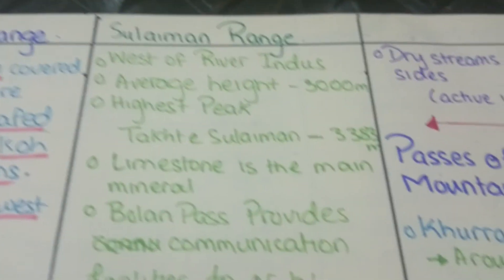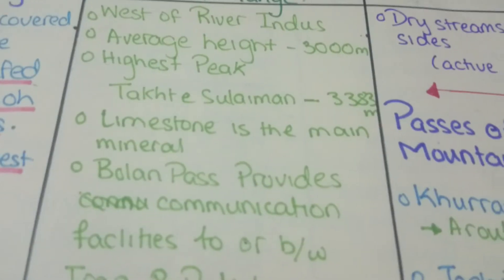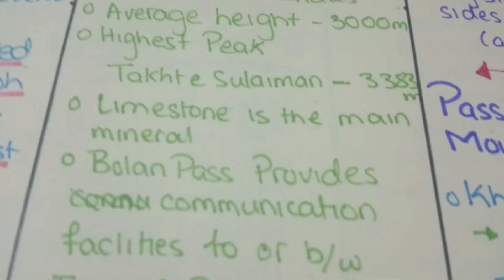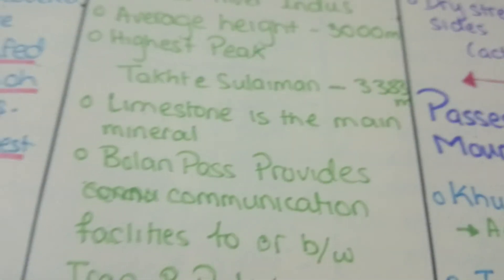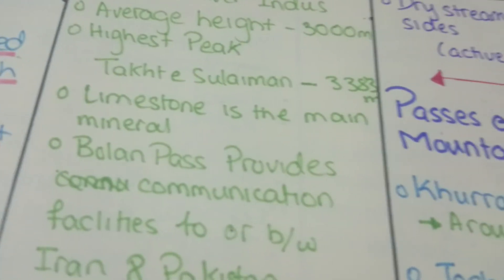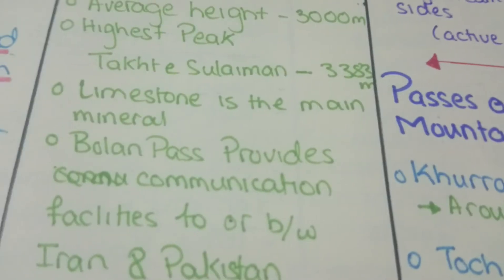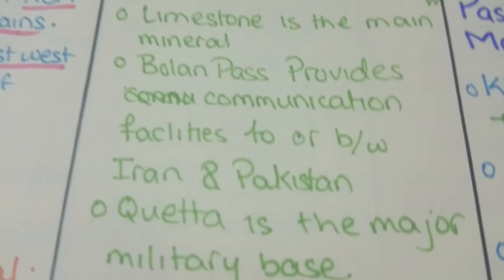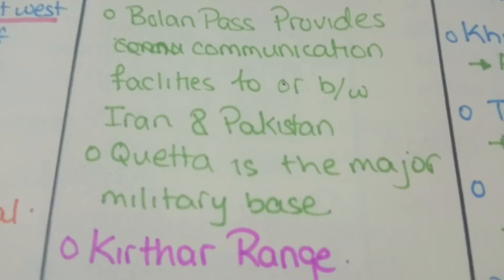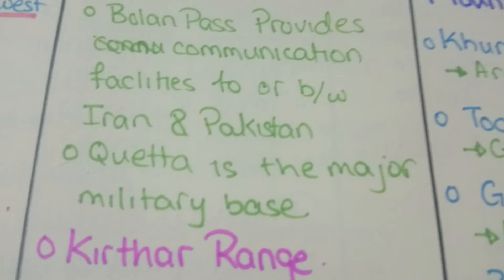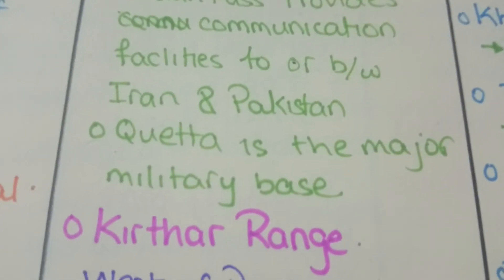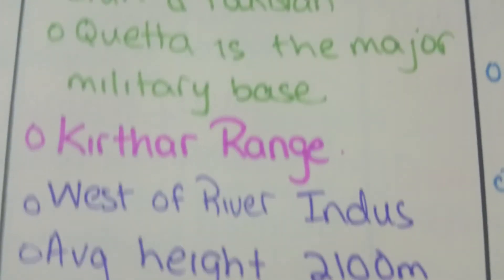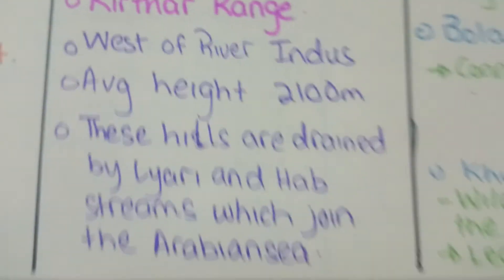The Suleiman Range lies west of the River Indus. The average height here is 3,000 meters. The highest peak is Takht-e-Suleiman at 3,383 meters. Limestone is the main mineral. The Bolan Pass provides communication facilities between Iran and Pakistan, and Quetta is the major military base.